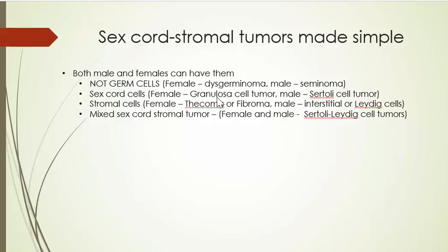The sex cord cells are the granulosa cells in females and the Sertoli cells in males — cells which have a nutritive, nursing, protective function for the developing germ cells. The tumors they form are granulosa cell tumors in females and Sertoli cell tumors in males.